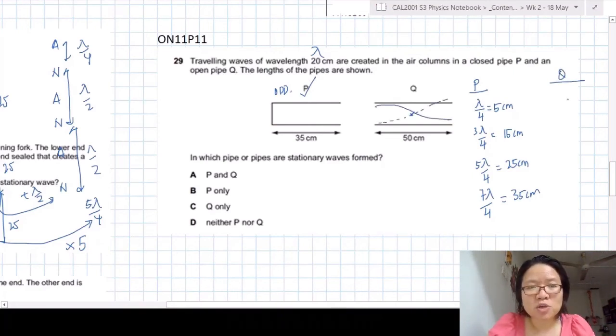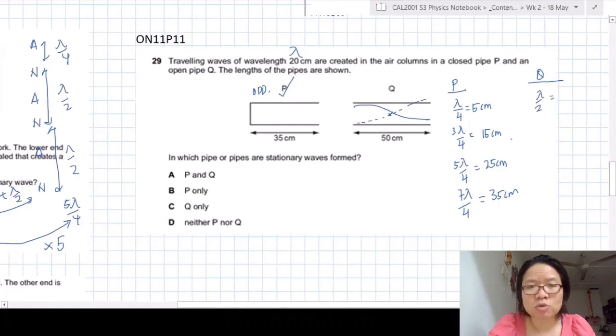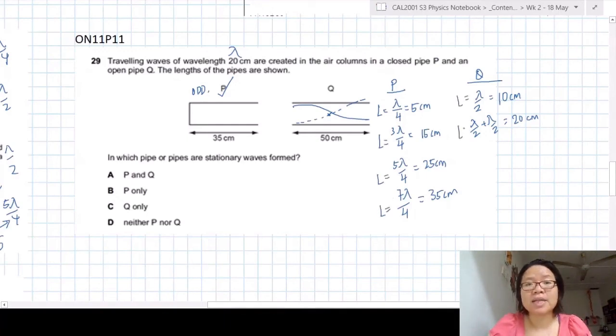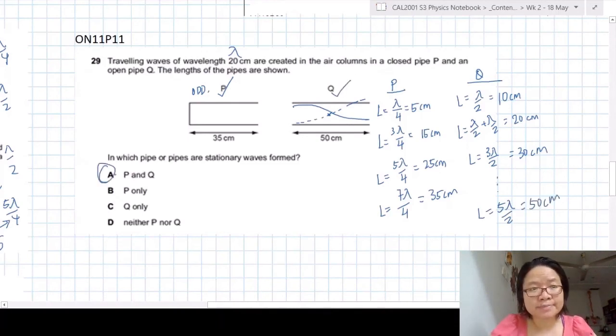So for Q, it's all harmonics. So lambda over 2, which is 10 cm plus lambda is 20. Then lambda over 2 plus lambda over 2, add another 10 cm. 10 plus 10 is 20. So it's the same idea. You add another lambda over 2, you get 30. Then you add another lambda over 2. So all these are different possible lengths of the column. So you get 30 cm. Then finally you will get 50 cm because it fits inside the pattern. So your answer will be P and Q. Goodbye.